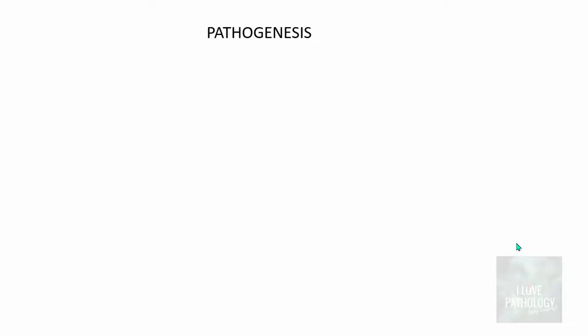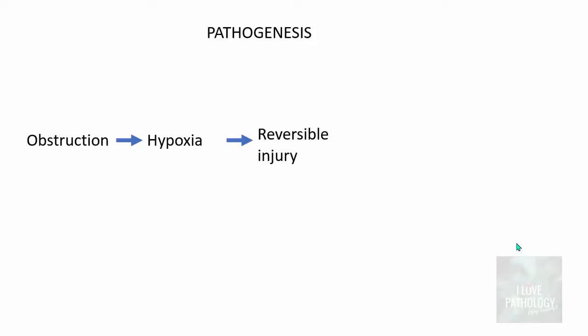The pathogenesis of infarction: whenever there is an obstruction due to the various causes mentioned, it results in hypoxia to the tissue supplied by the affected artery. Hypoxia is one of the most common causes of cell injury. It begins with reversible injury in the form of hydropic change. If the obstruction is not corrected, it leads to irreversible injury — tissue death or necrosis — which is often accompanied by inflammatory cell infiltrates.